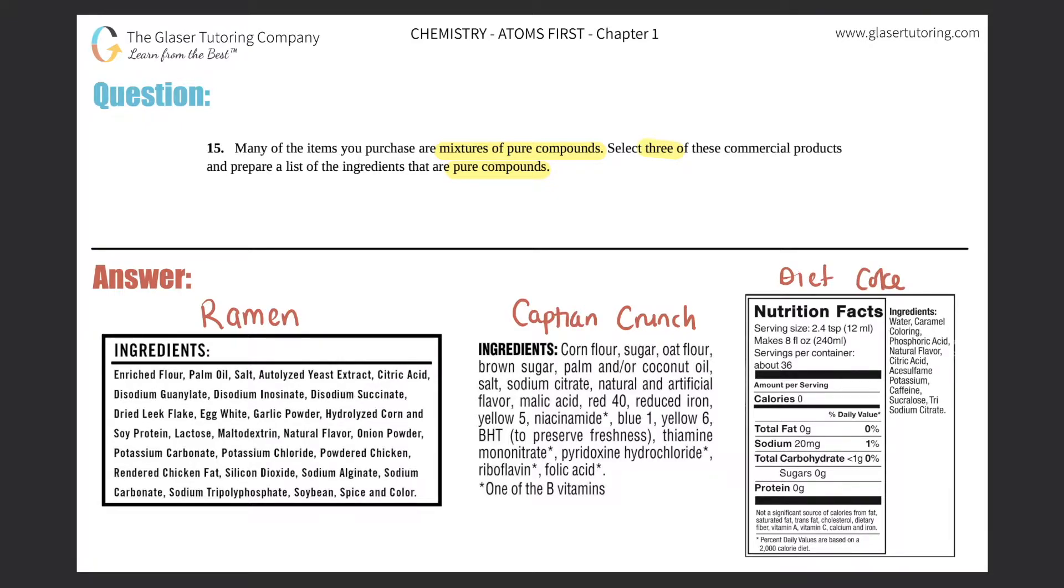Okay, so let's just pretend we're going to look for our pure compounds in ramen, Captain Crunch, and Diet Coke. There's a ton of them. If I scan through ramen, let's do ramen first, second, and then third.